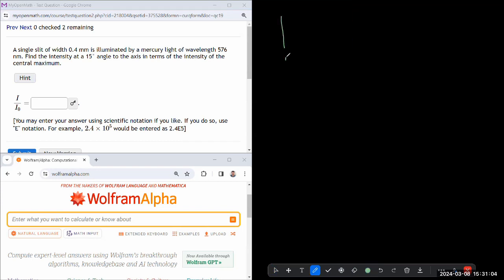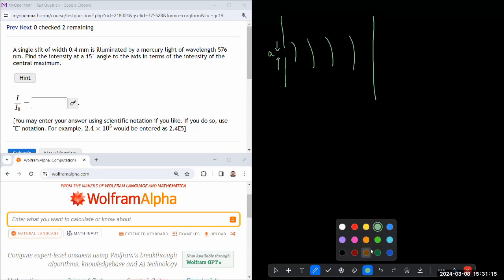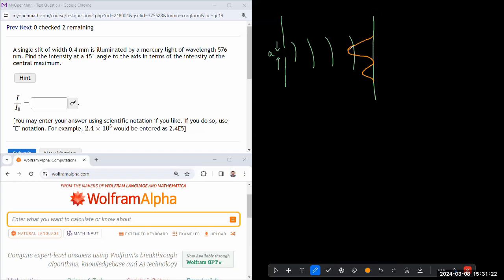So I have a single slit of some width A being illuminated, and then it's projecting a pattern here on a screen. And if you remember seeing the diffraction pattern, there's a central maximum, and then there's these smaller things next to the central maxima.